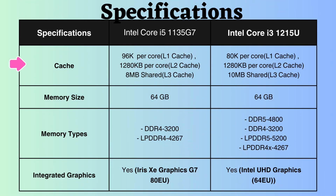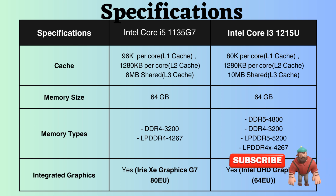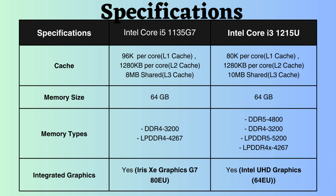The L1 cache of the Intel i5-1135G7 is greater than that of the Intel Core i5-1215U, so the Intel i5-1135G7 performs better when it requires fast access to small amounts of data. On the other hand, the L3 cache of the Intel i5-1215U is much greater than that of the Intel i5-1135G7, which can improve performance for tasks that require large amounts of data or involve a sequential access pattern, such as scientific computing.